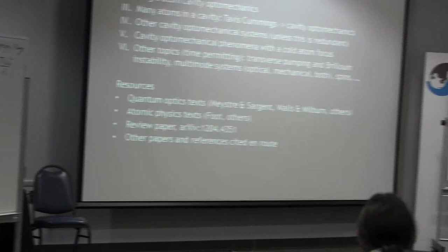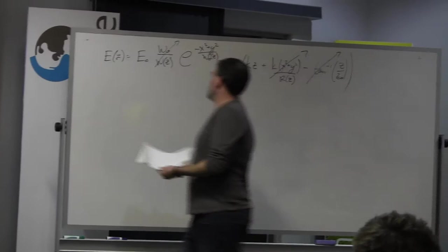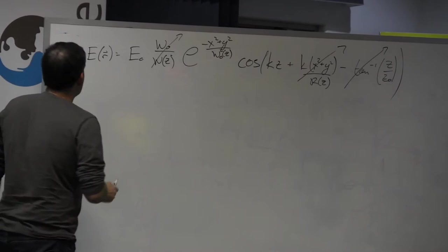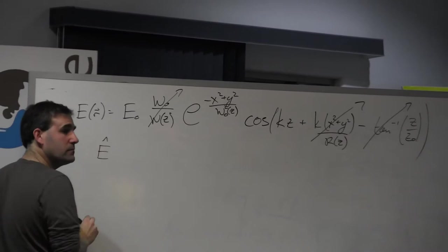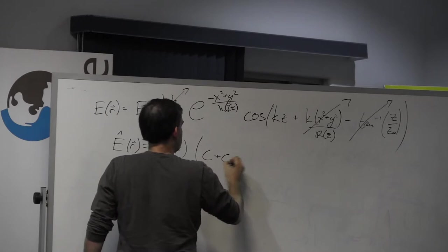What about their quantum properties? So I have here the mode function of the electromagnetic field inside of the cavity. Now what I'd like to do is quantize it. So how do I do that? Well, I'm going to write that the electric field is now an operator. And it's this classical mode function, which I have to normalize at some point, times the field operators.